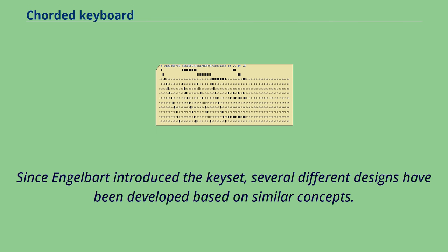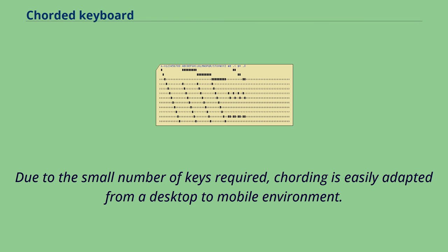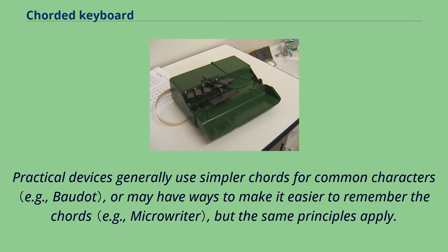Since Engelbart introduced the keyset, several different designs have been developed based on similar concepts. As a crude example, each finger might control one key corresponding to one bit in a byte, so that using seven keys and seven fingers, one could enter any character in the ASCII set — if the user could remember the binary codes. Due to the small number of keys required, cording is easily adapted from a desktop to a mobile environment. Practical devices generally use simpler chords for common characters, or may have ways to make it easier to remember the chords.